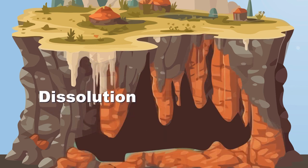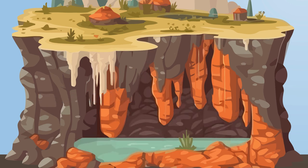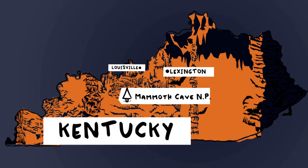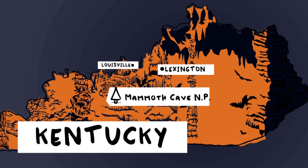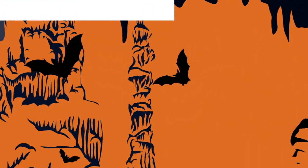Dissolution is the name of this process. Dissolution can occur with evaporite rocks as well, but water can break those atomic bonds without being acidic. Fractures in the rock that the water dissolves increase in size over thousands of years, forming a cave as it evolves. Mammoth Cave in Kentucky is a national park — it's the longest cave on earth, over 400 miles through the rock.